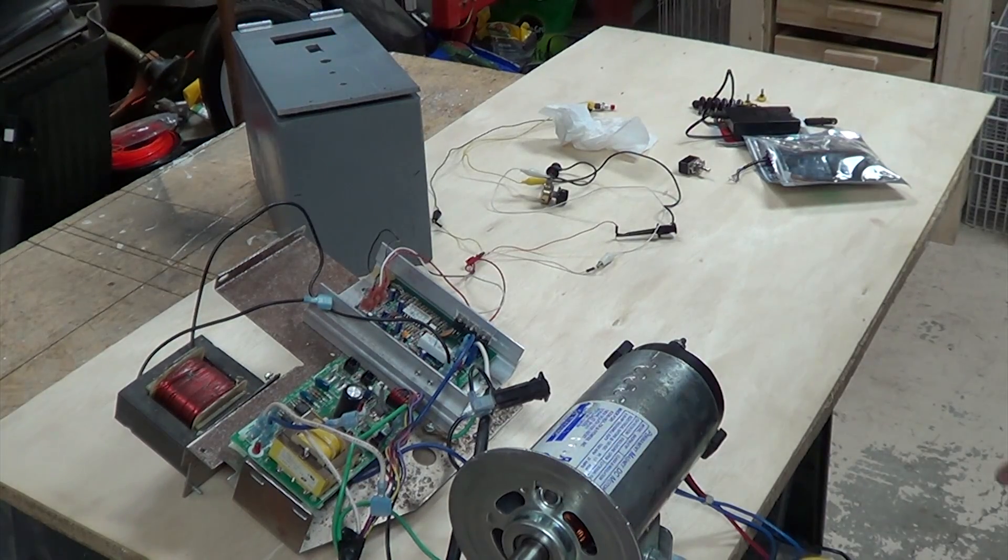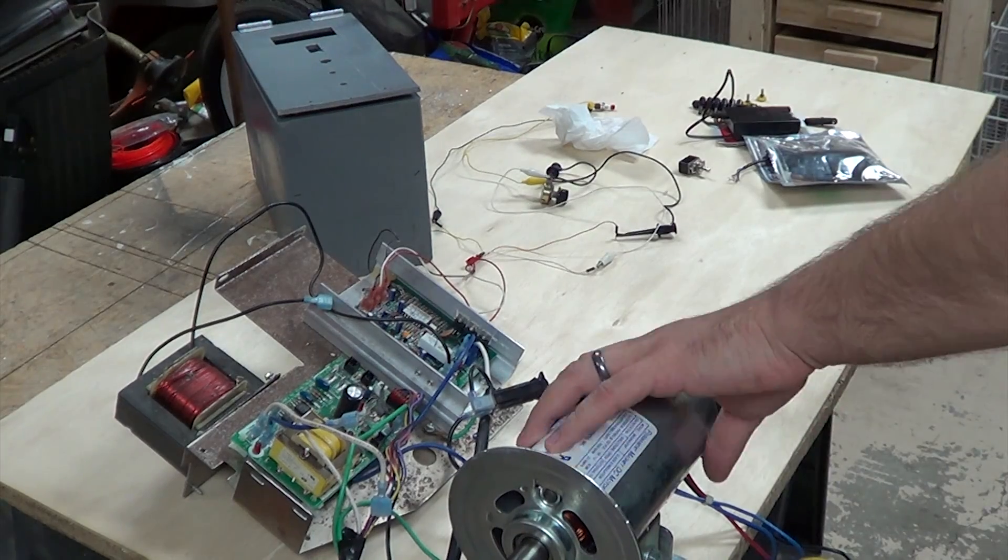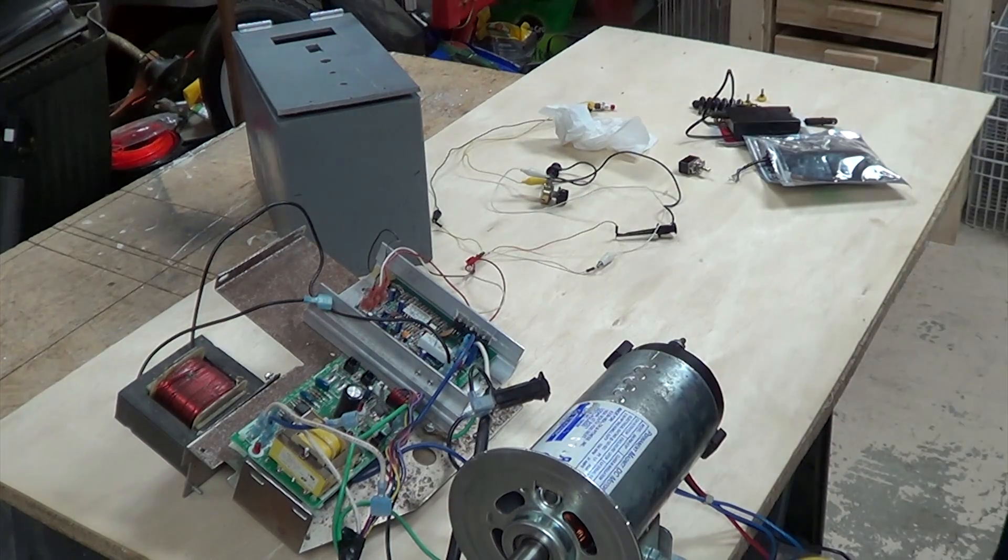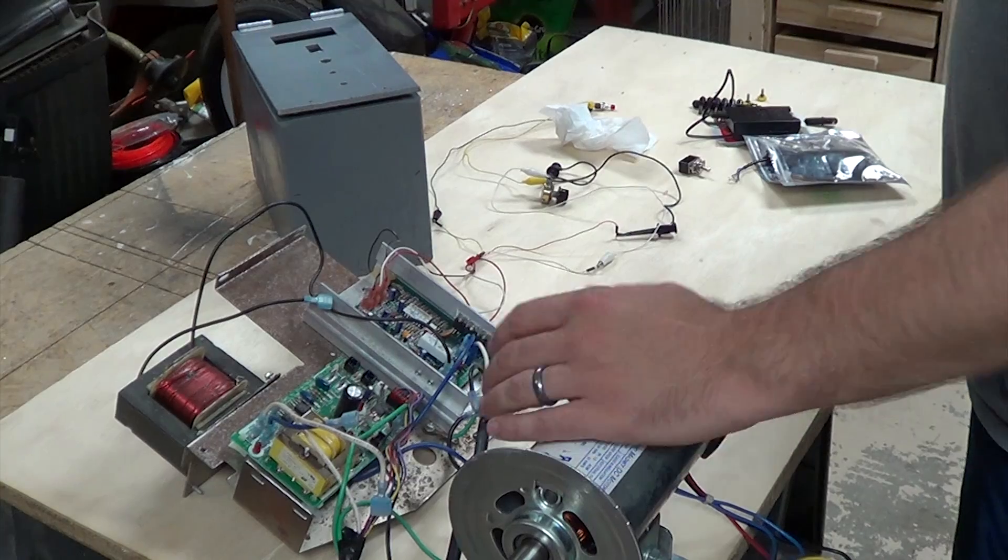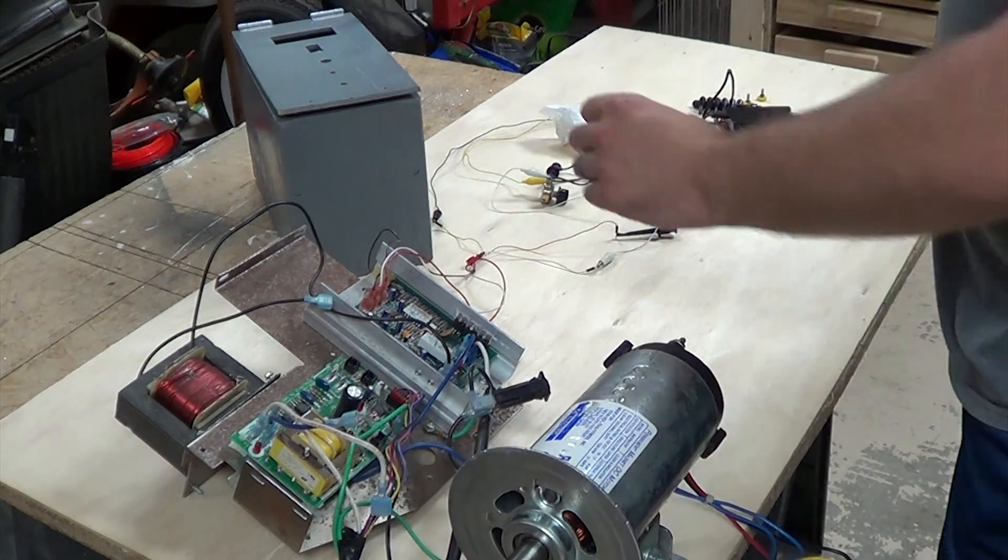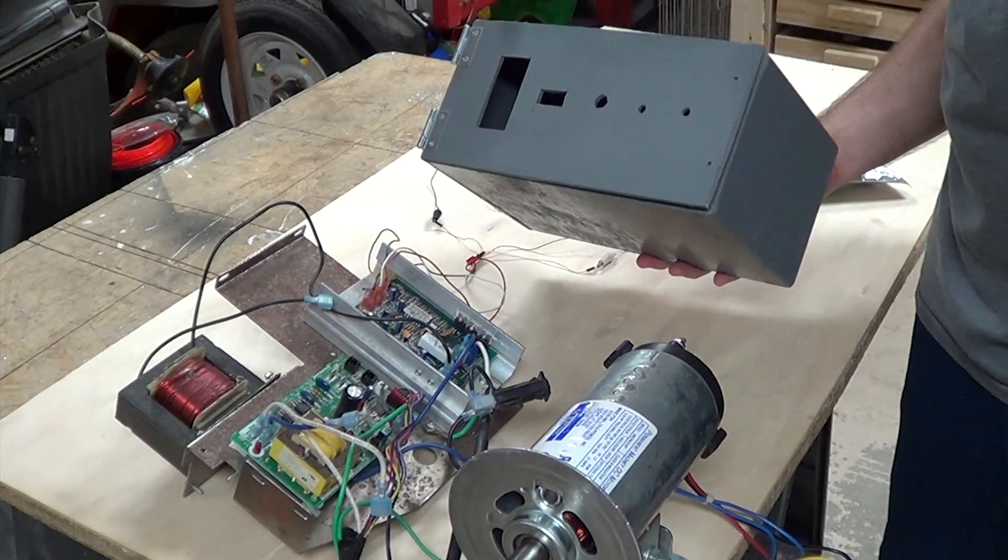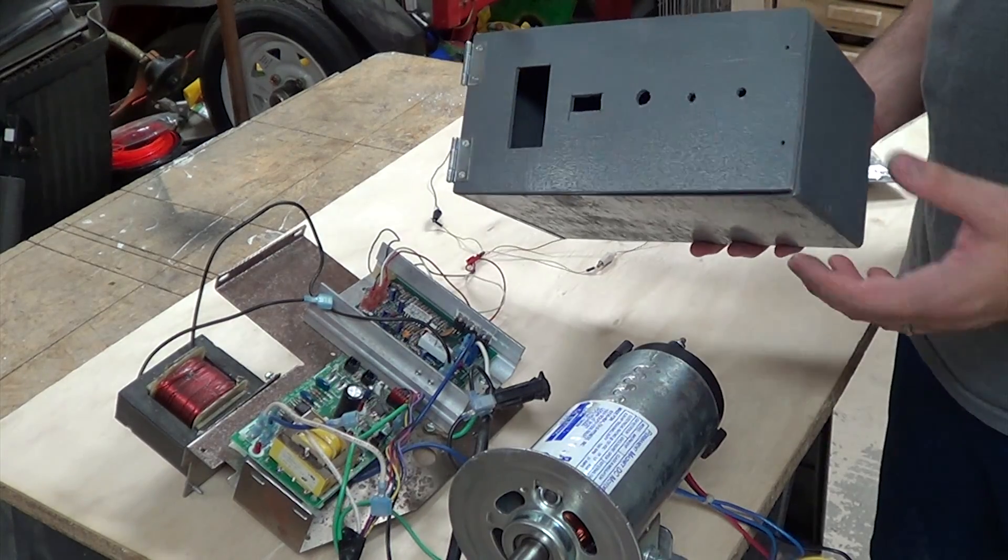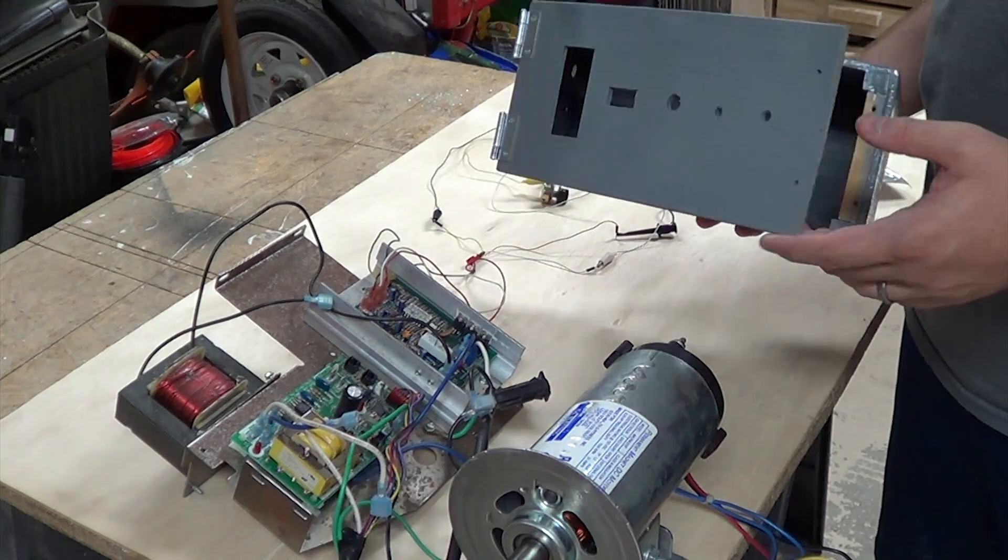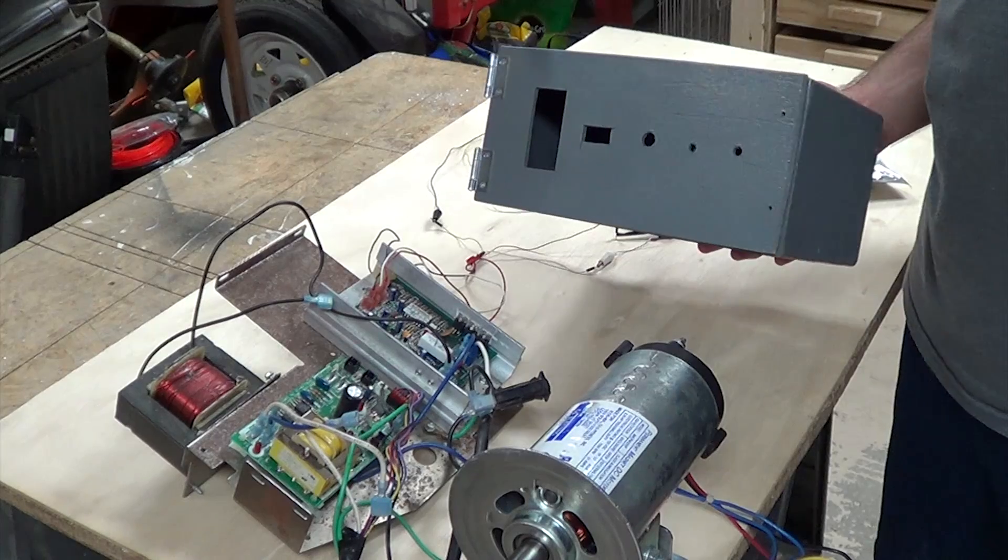Alright, so I'm going to attempt to take this treadmill motor power supply and install it on my horizontal mill. Off-camera I went ahead and built this box to hold all of my electronics. It's a really simple box. If you can't build a box, then you probably shouldn't even be watching this video.